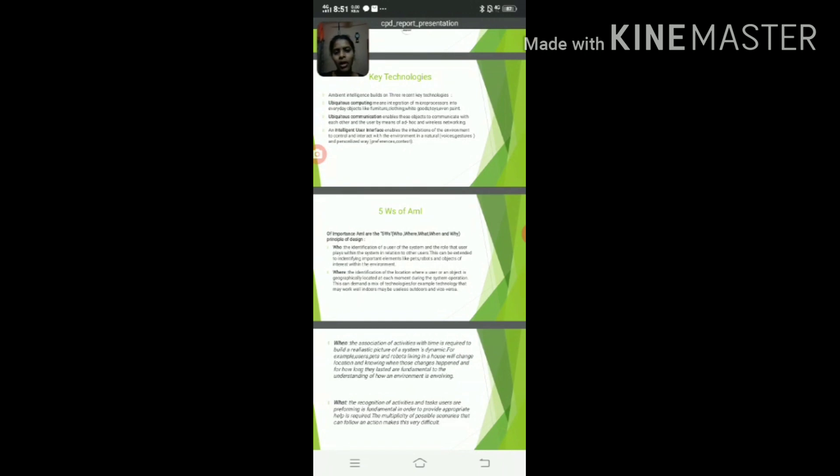Five Ws of Ambient Intelligence are included. First we start with WHO. WHO means the identification of a user of a system and the role that user plays within the system in relation to other users. This can be extended to identifying important elements like pets, robots, and objects of interest within the environment.